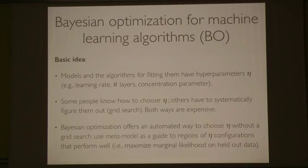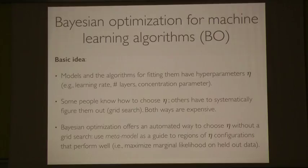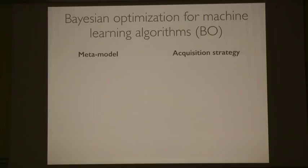The basic idea is to use a meta-model as a guide to regions of hyperparameter configurations that perform well. When we say perform well, I mean maximize marginal likelihood on eta. You could also consider minimizing mean squared error or maximizing accuracy as proxies for maximizing marginal likelihood. There are two key aspects of Bayesian optimization: a meta-model that guides to regions, and an acquisition strategy.